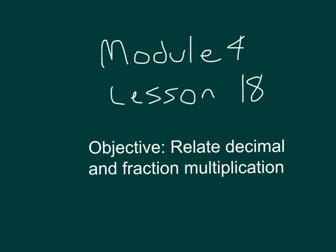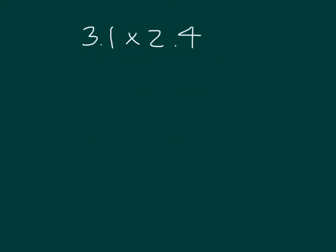The objective within this lesson is to relate decimal and fraction multiplication. Here we have 3.1 times 2.4. Let's rewrite this as a fraction expression.